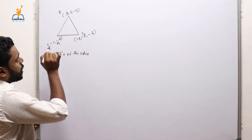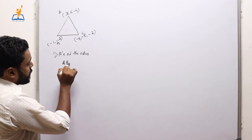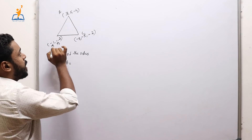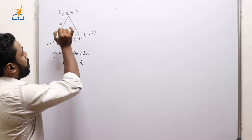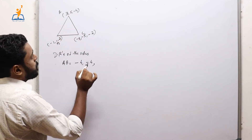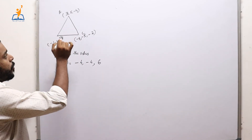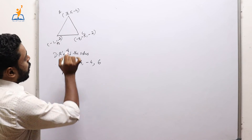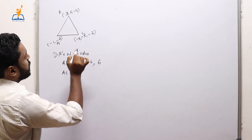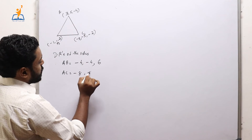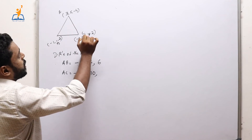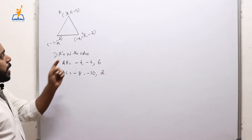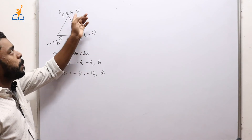Direction ratios of AB: (−1−3, 1−5, 2−(−4)) = (−4, −4, 6). Direction ratios of AC: (−5−3, −5−5, −2−(−4)) = (−8, −10, 2). We take 2 common: −8 = 2×(−4), −10 = 2×(−5), 2 = 2×1.